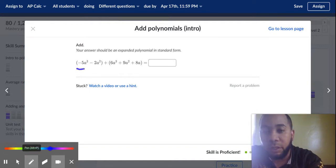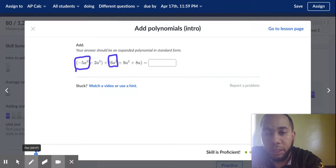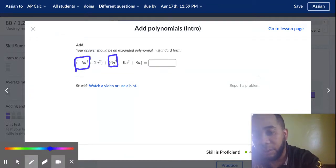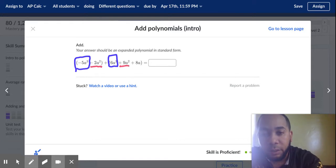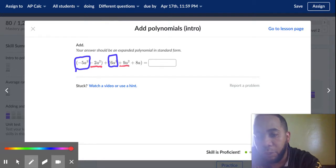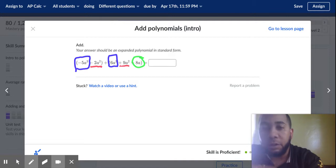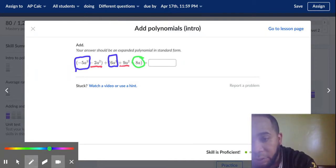The first thing I'm going to do is circle your like terms. You got a to the third power and you got 6a to the third power - those are like terms. Then I'm going to underline every time a is to the second power, and then I'm going to put a little circle around a to the first power.